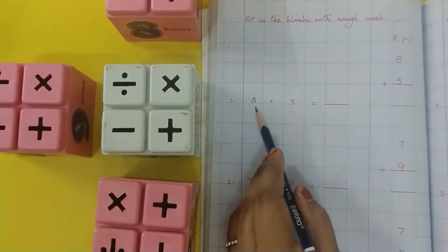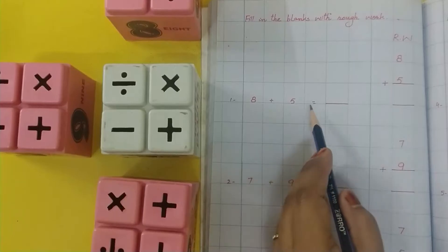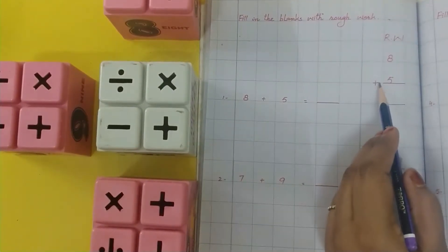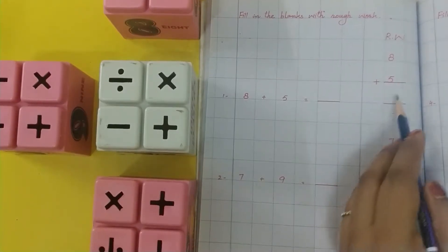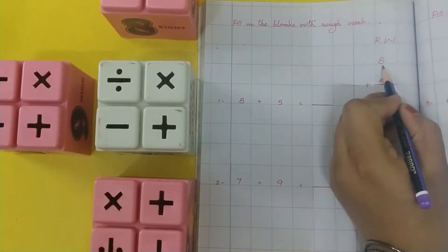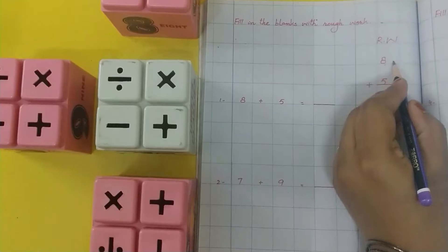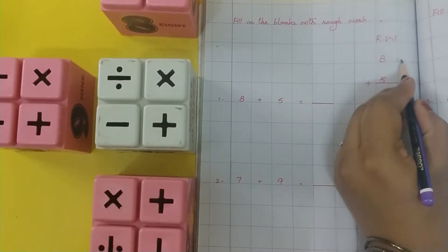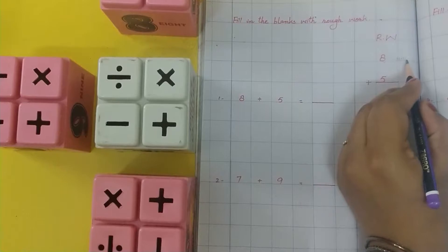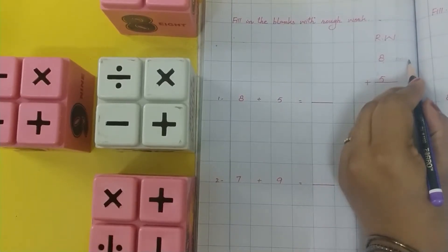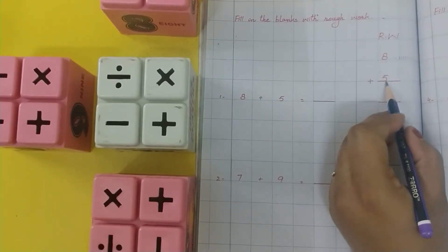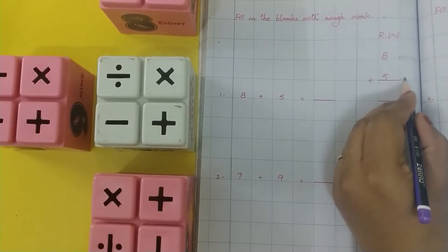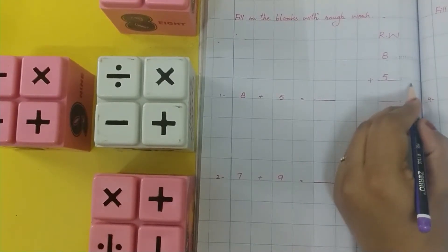Number 1. 8 plus 5 is equal to dash. First digit is 8, so we draw 8 lines here: 1, 2, 3, 4, 5, 6, 7, 8. Second digit is 5, we draw 5 lines: 1, 2, 3, 4, 5.